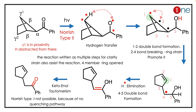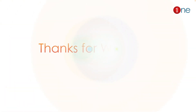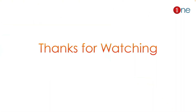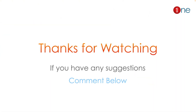Tautomerism occurs, and finally you have a ketone with a 5-membered ring and a phenyl group. The key concept to learn here is the Norrish Type 2 reaction: gamma hydrogen transfer to oxygen through a 6-membered transition state.